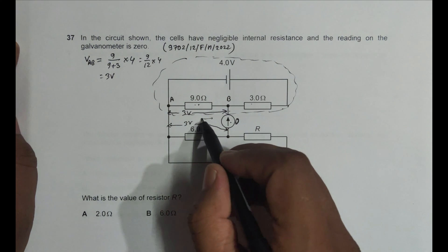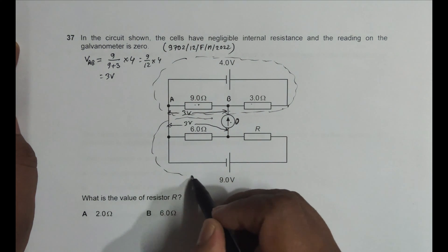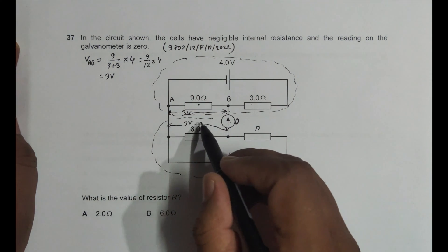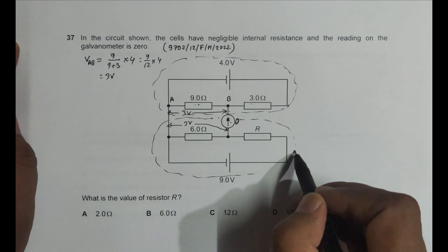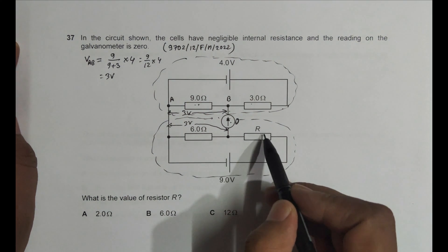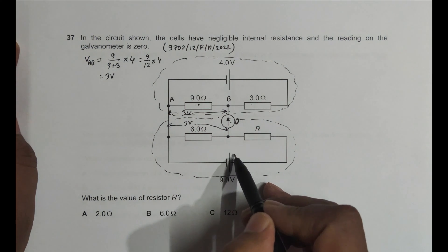That means the PD here also should be equal to 3 volt. And in this area also, in this circuit, there is a voltage divider. Here also we have a voltage divider circuit. The resistors 6 ohm and R form a voltage divider to this 9 volt.